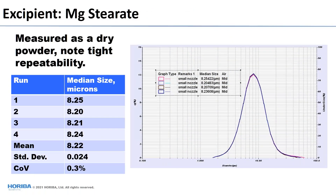Moving to practical examples: magnesium stearate run four repeats as a dry powder shows a median size of about 8.2 microns, a standard deviation of 0.024 microns, and a coefficient of variation of 0.3%. The size distribution graphs overlay quite nicely. This rests on two things: in the dry powder measurement, we run the sample and then take a fresh batch for the second run — so not only is the analyzer repeatable, but our splitting and sampling consistency is repeatable as well.